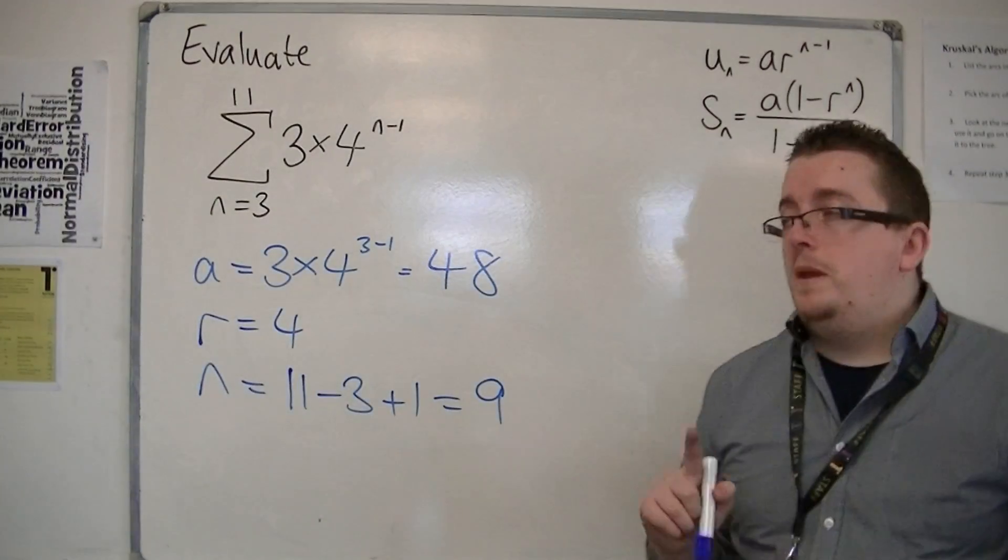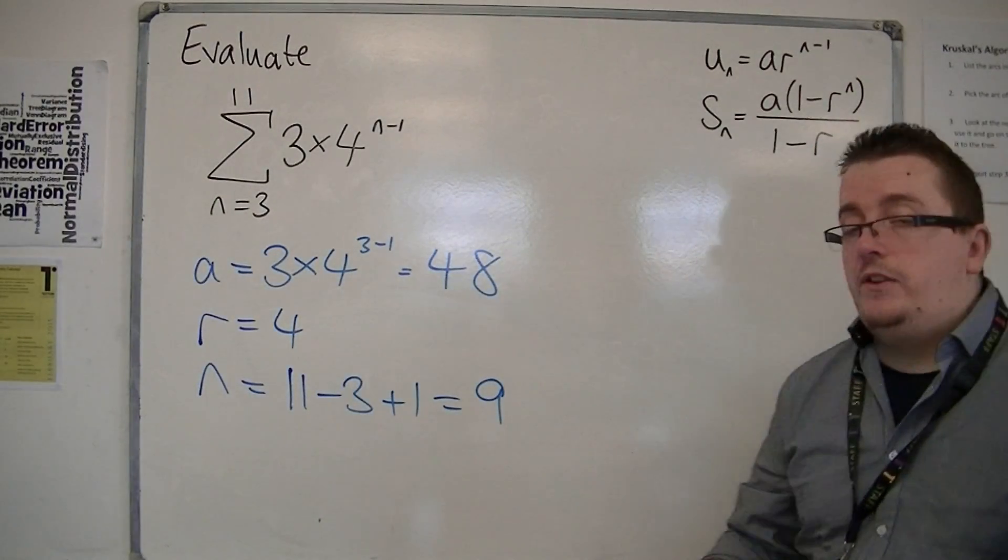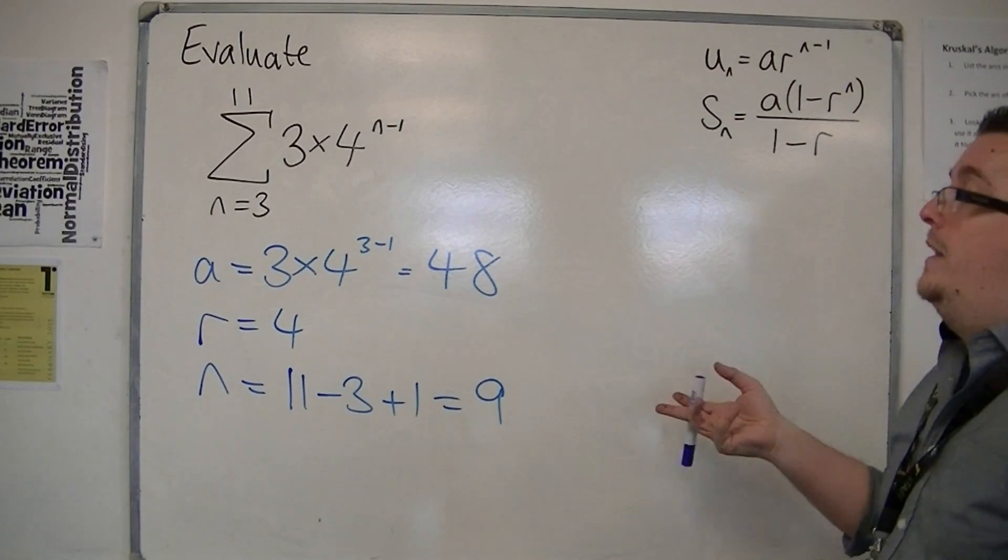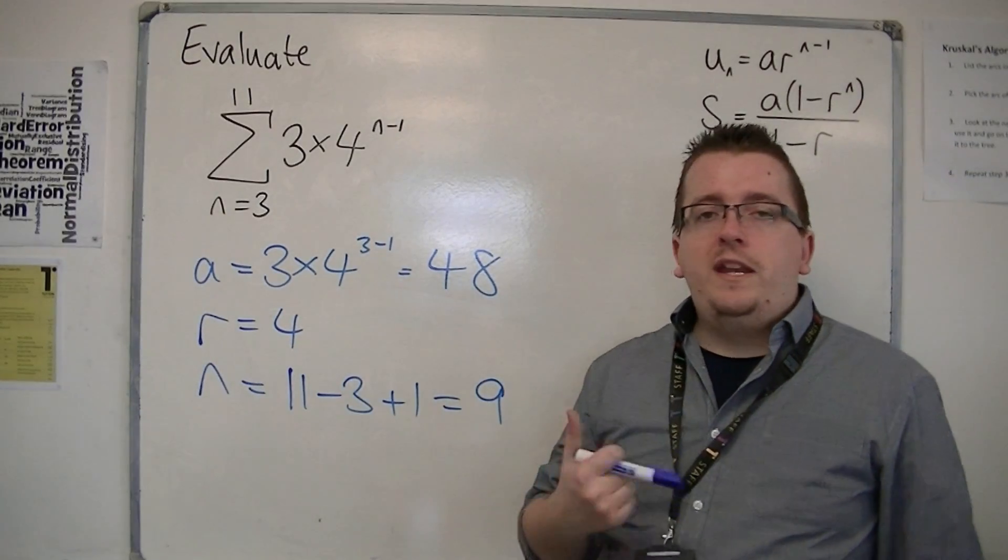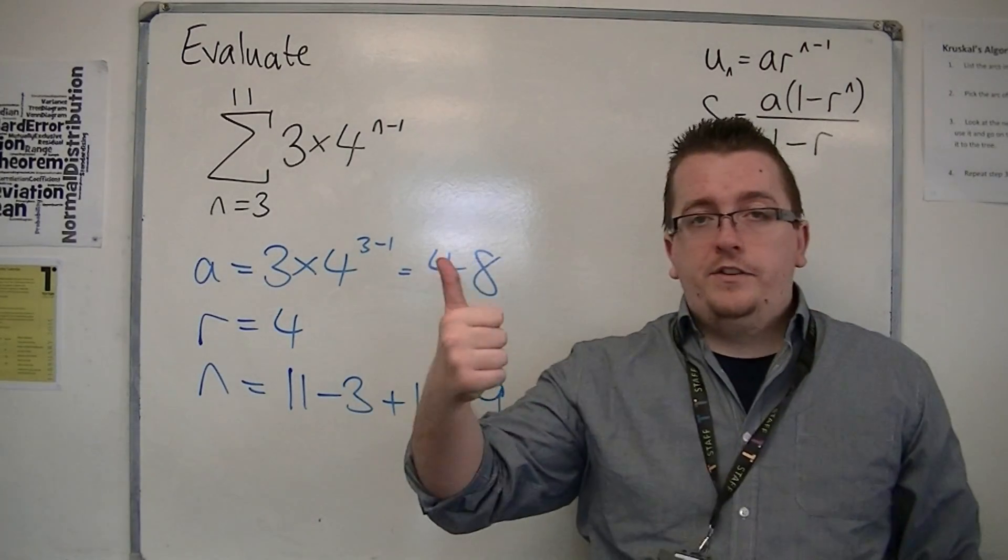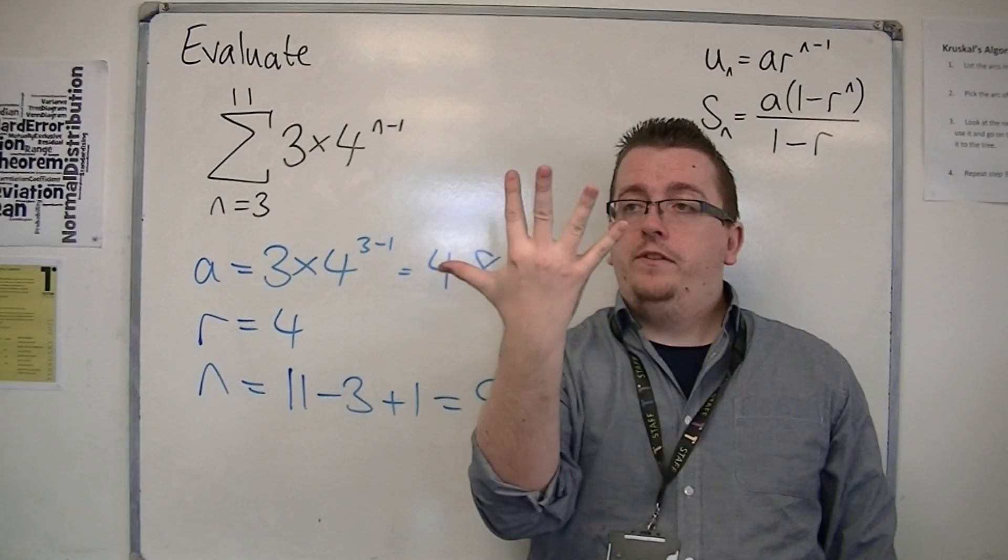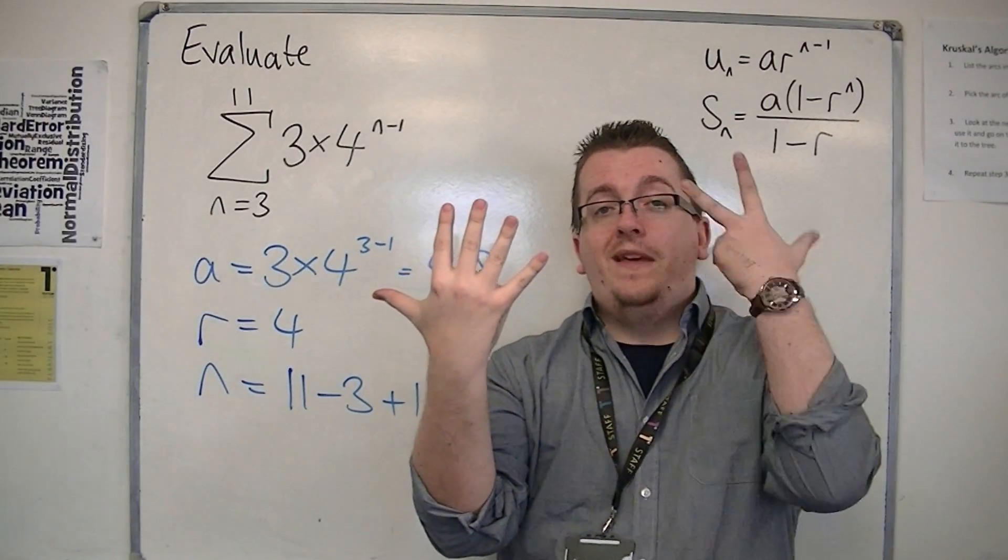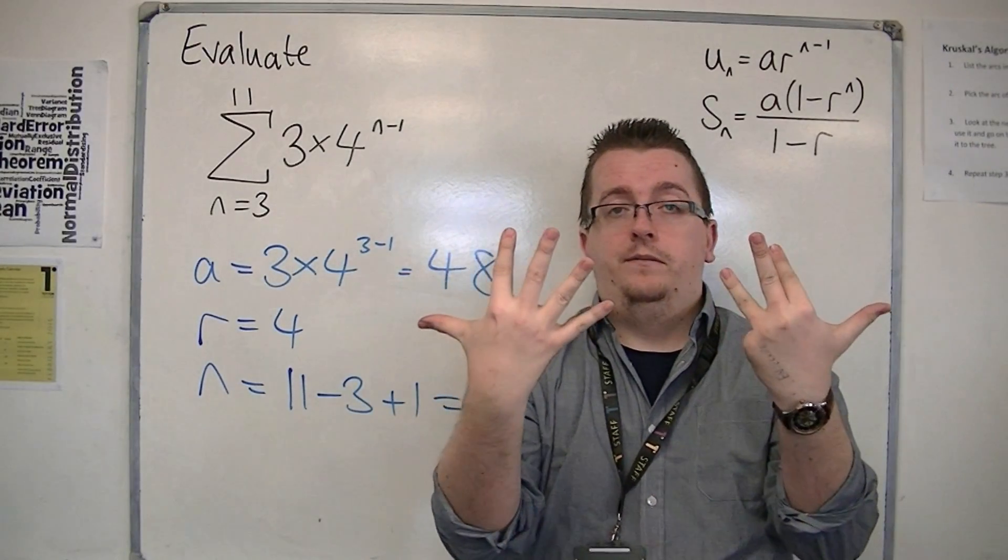Now that's where a lot of people get confused. Surely there's eight terms, people will say, from three to eleven, but you're not including the third term when you count that. So third, fourth, fifth, sixth, seventh, eighth, ninth, tenth, eleventh. So there's nine.